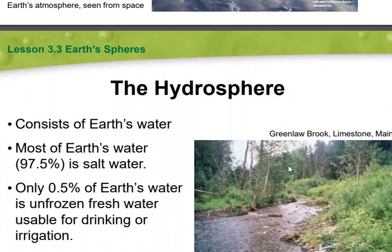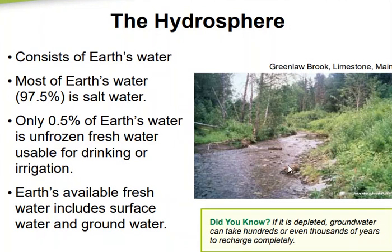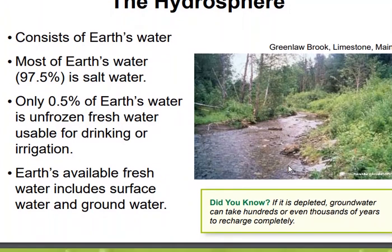Hydra, as in hydrate, means water. From even elementary school we go over the water cycle, but water cycles through the lithosphere, biosphere, and atmosphere continuously. Water is constantly cycling — sometimes it takes a long time, sometimes it doesn't. The hydrosphere consists of Earth's water. Most of Earth's water is salt water; we have very little fresh water. Only 0.5% of Earth's water is unfrozen fresh water usable for drinking or irrigation.